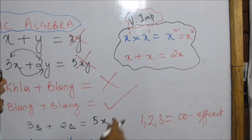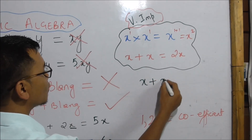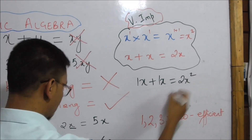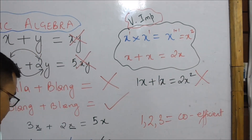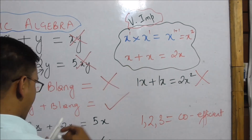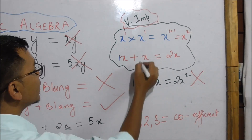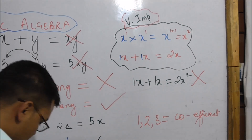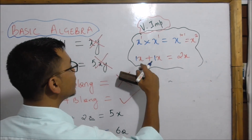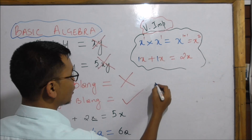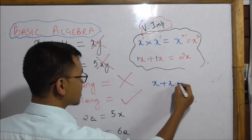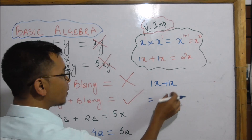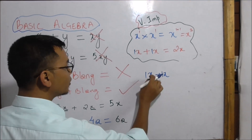X plus X is the power of 1 plus 1 plus the power of 1 plus 2. The power of 2 plus 1 is 2. So if you check the answer, 1 plus 1 equals 2, and one X equals 1. You will be able to see the 2X result.